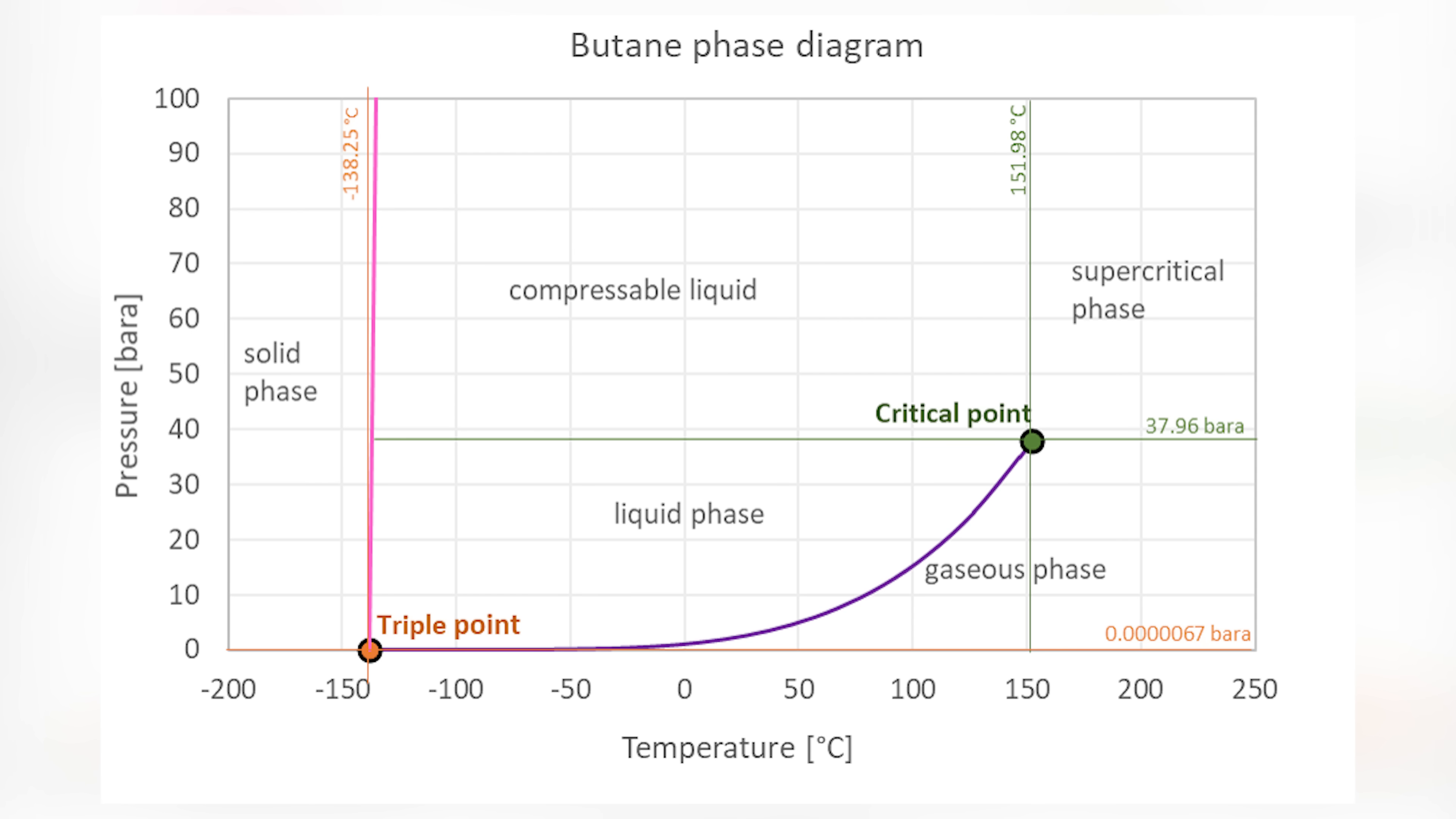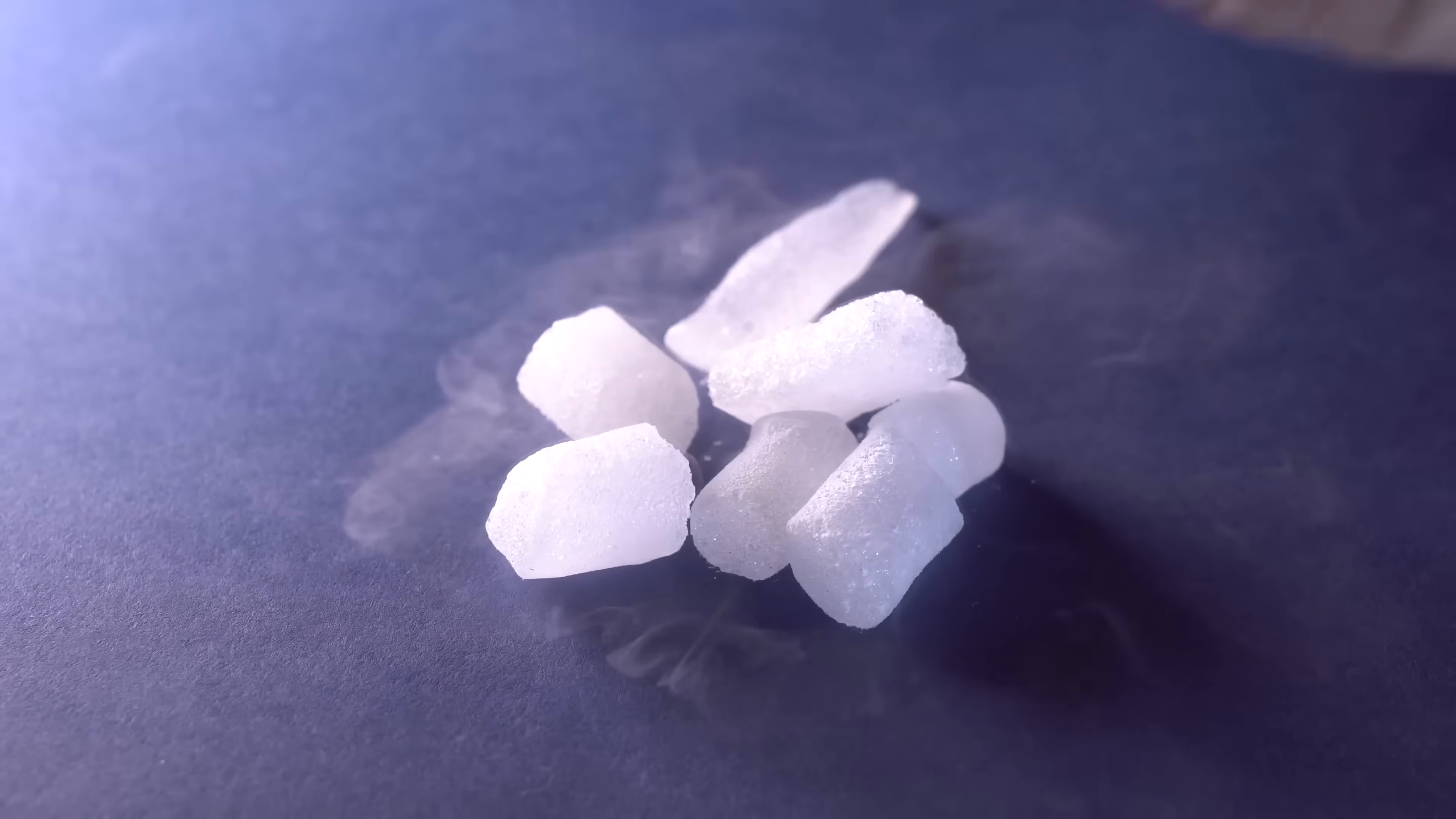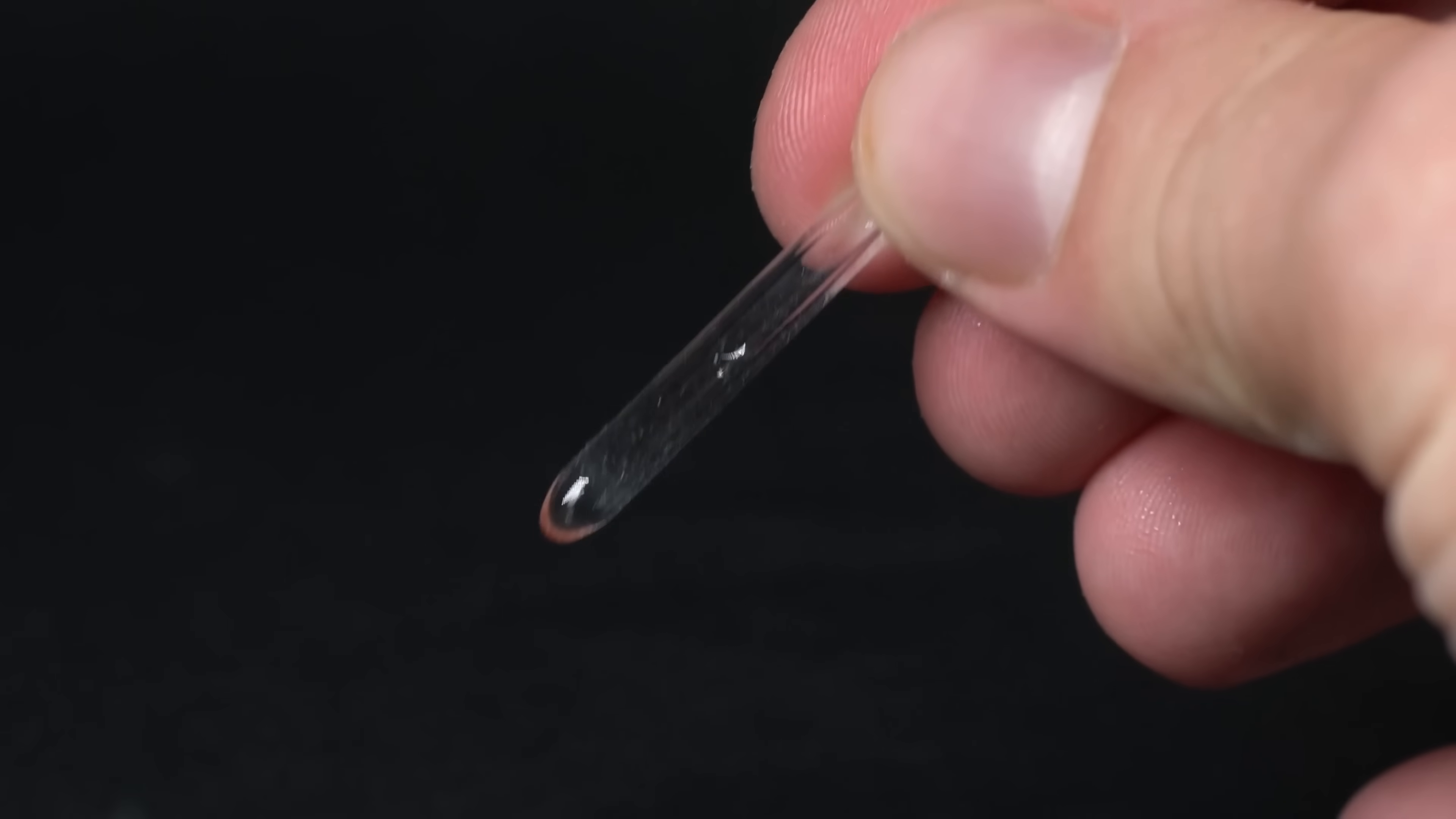There are phase diagrams for other gases besides butane. They're not always so similar. For example, carbon dioxide can't be liquid at any atmospheric pressure. It remains solid, which is why it's also called dry ice. Carbon dioxide can only be liquefied at a pressure of 70 atmospheres, like in this sealed ampule, which can withstand that high pressure.